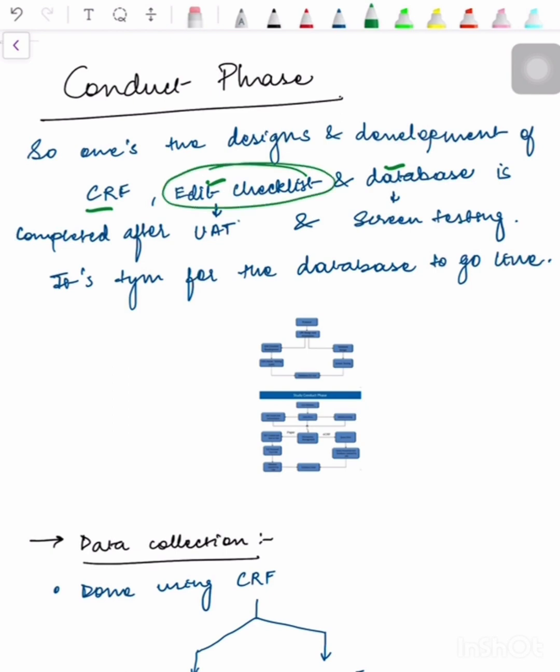The edit checklist is tested with the help of User Acceptance Test, and the database is tested with the help of screen testing. It is then time for the database to go live, and this happens in Phase 2, known as the Conduct Phase.